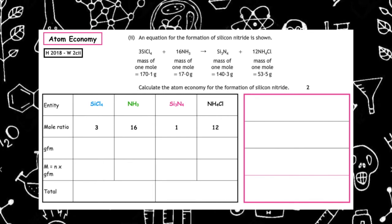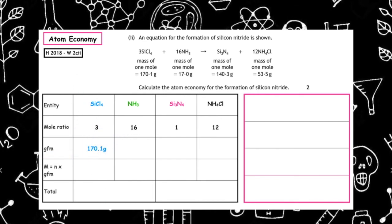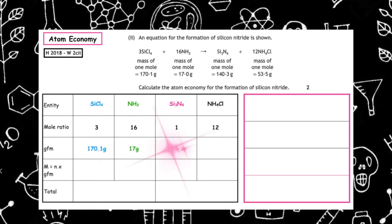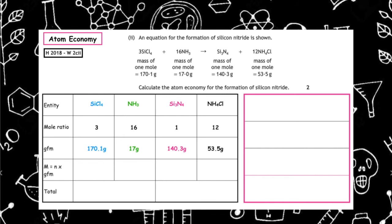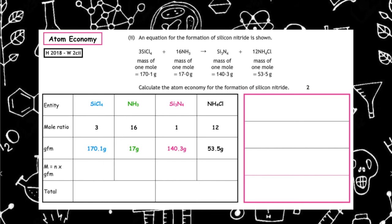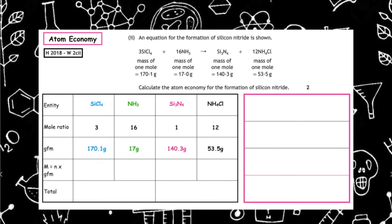We then calculate the gfm for each: 170.1, 17, 140.3, and 53.5. To calculate the mass, we do the number of moles times the gfm.